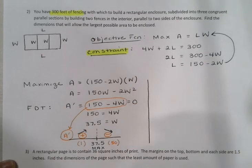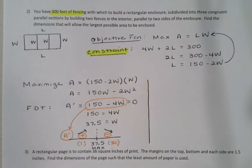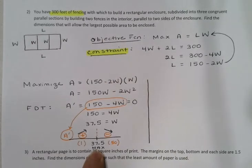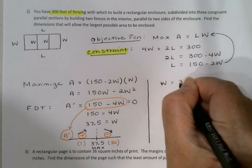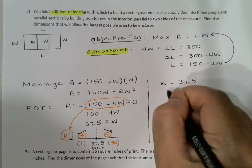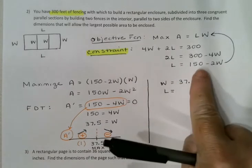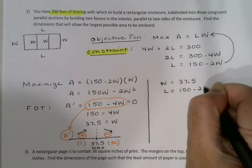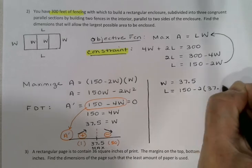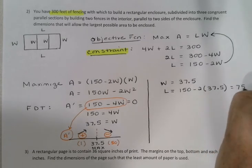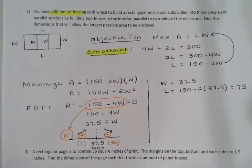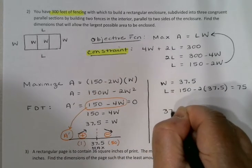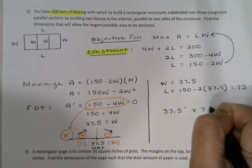To write down the final answer, I need to find again the dimensions. I've found the width, 37.5. To get the length I'll plug back into my constraint. 150 - 2 times 37.5, which is 75. And the dimensions of my rectangle would be 37.5 feet by 75 feet.